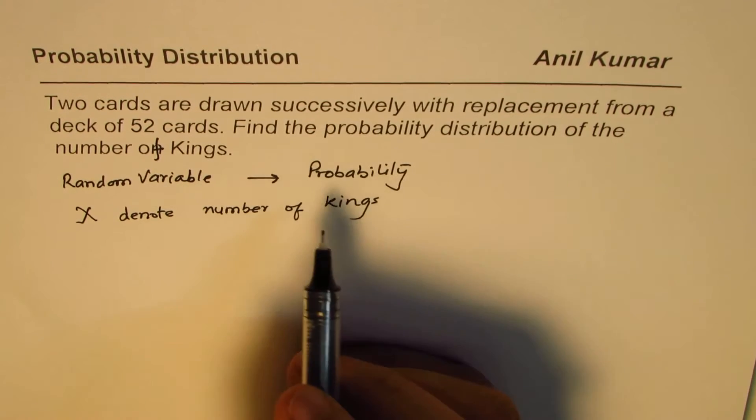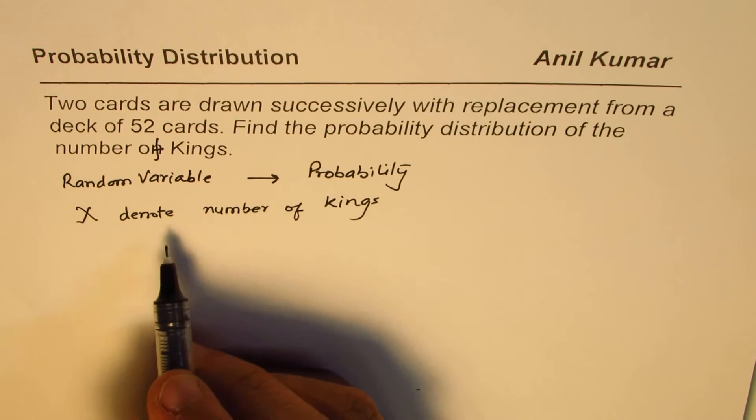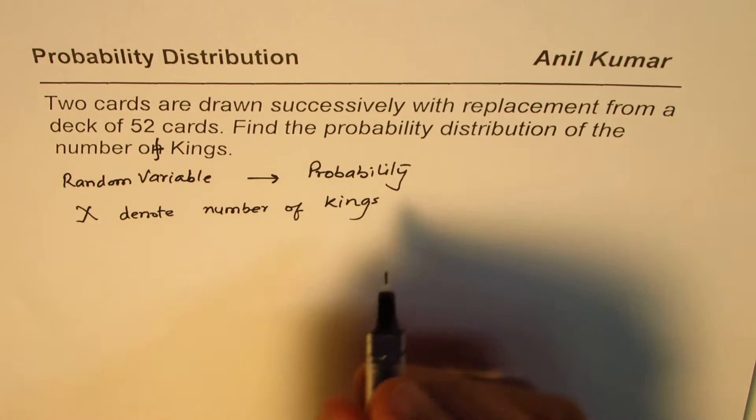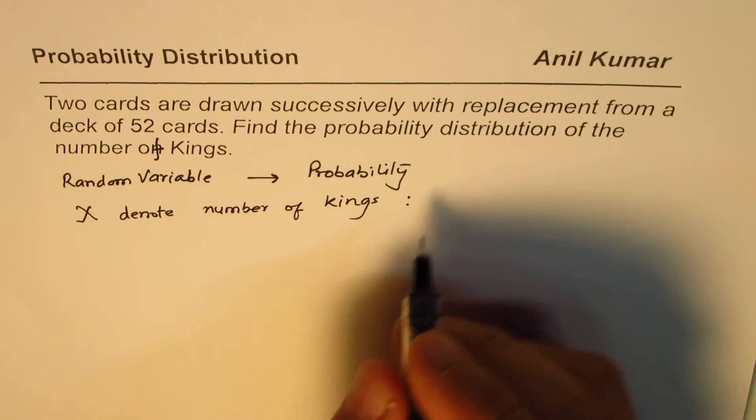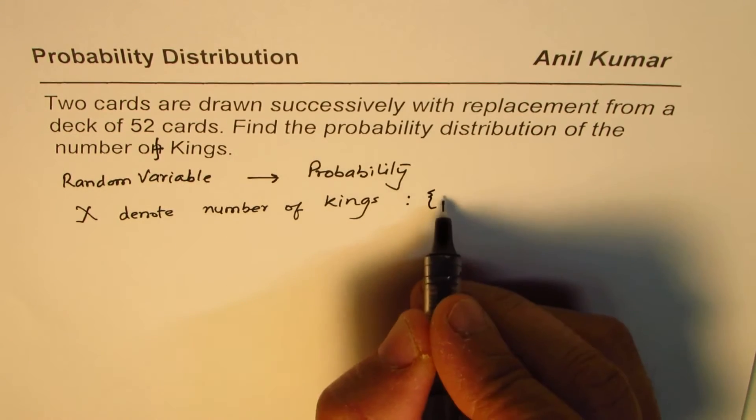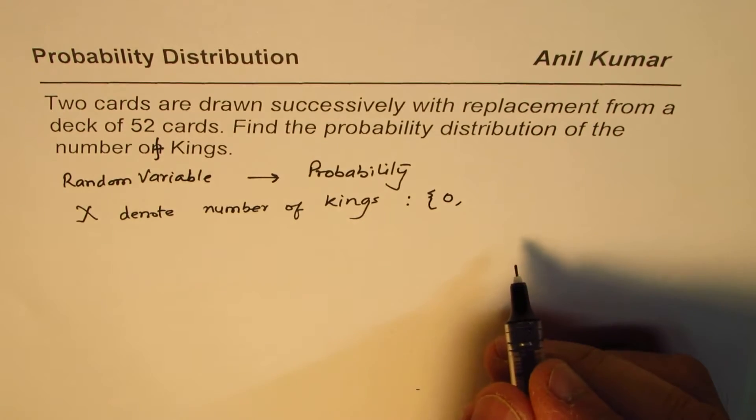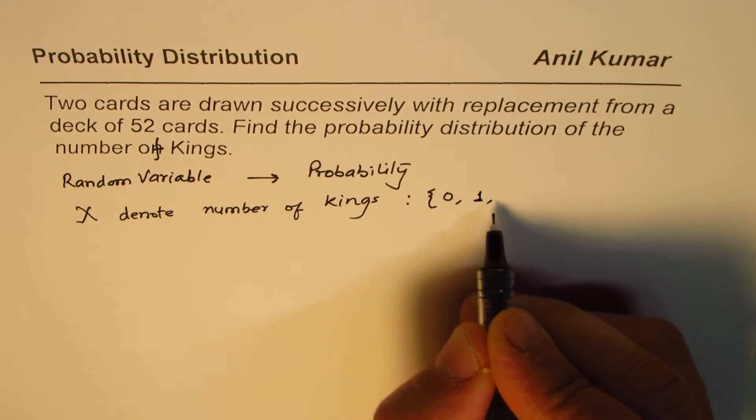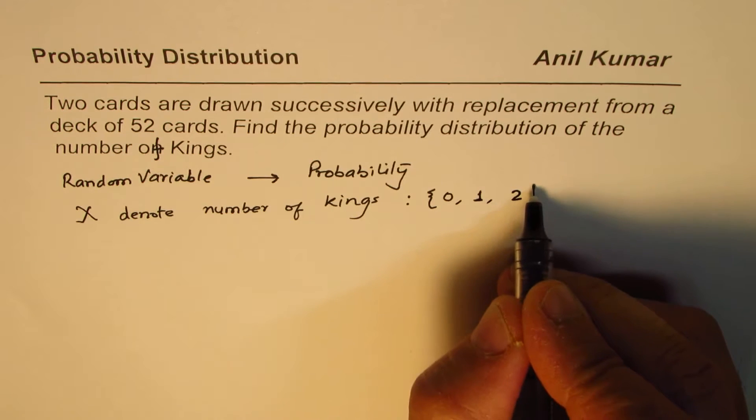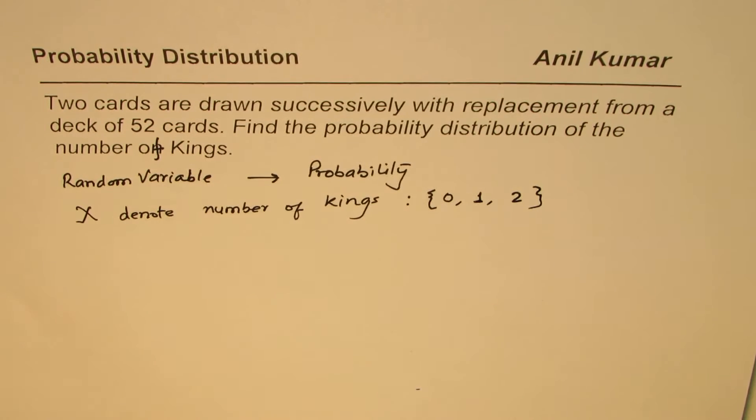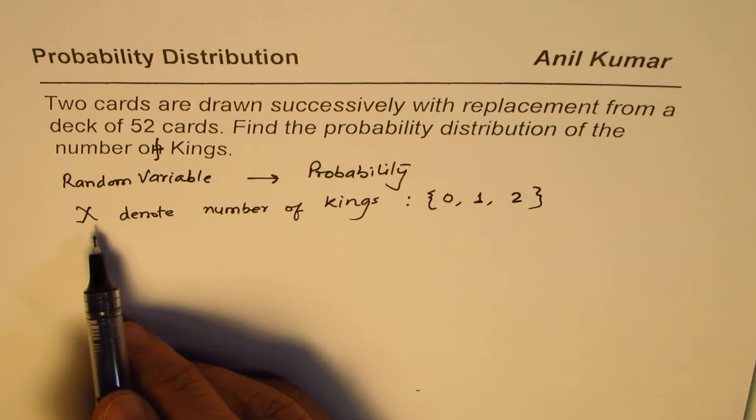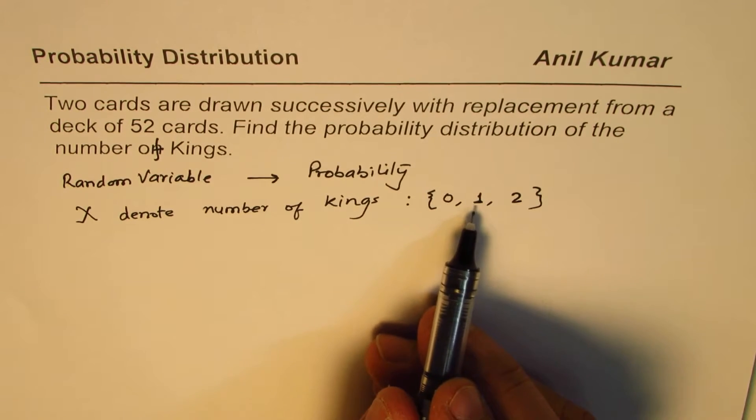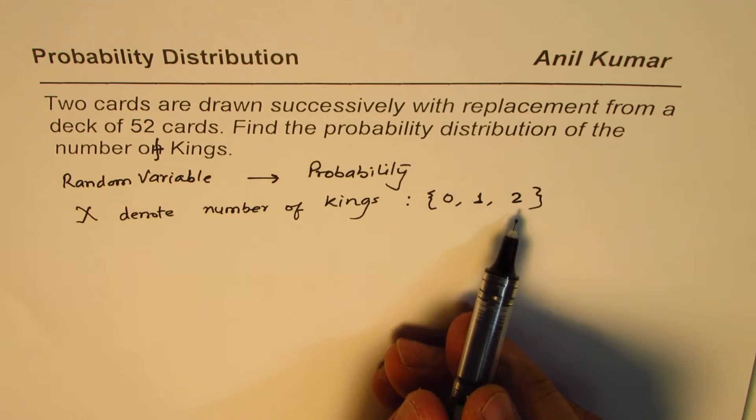Now, clearly, when you are drawing two cards, what are the possible values which X can have? Outputs for X can be either 0, none of those two are kings, or we could get one king, or we can get both the kings. You are drawing two cards, so these are three possible outcomes of this random variable.